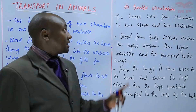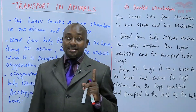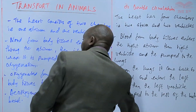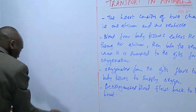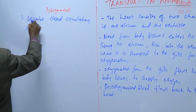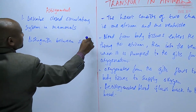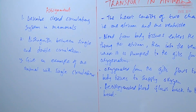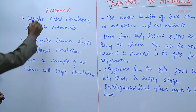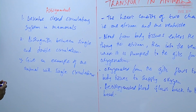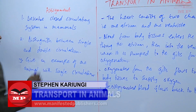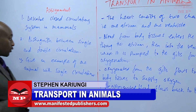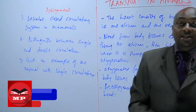We'll stop there and have an assignment on the same. Question one: describe the closed circulatory system in mammals. Question two: distinguish between single and double circulation. Question three: give an example of one animal with single circulation. We'll stop there until next time — goodbye.